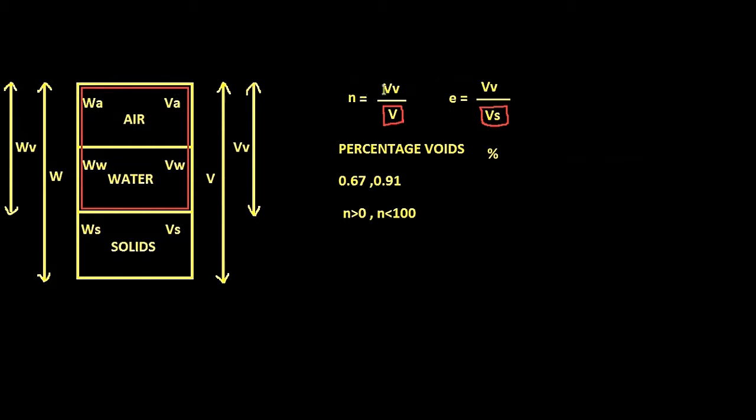Which is possible only when volume of voids is equal to total volume. Then that means there is no soil. There are only voids, which makes no sense at all. So maximum value of porosity should be less than 100 and is not equal to 100.